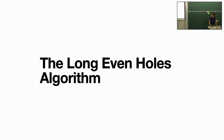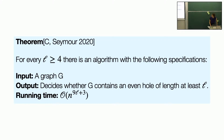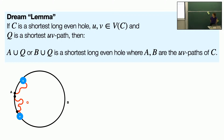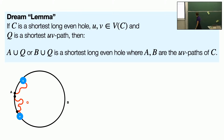Now I'll actually describe the long even holes algorithm. Here's the formal result — I've said it about ten times already. The main idea is something we would like very much to be true: if you have a shortest long even hole and you pick any two vertices on the path and take a shortest path between them, you could somehow substitute this path to get a new long even hole. This would yield a trivial algorithm to detect long even holes, because you could enumerate all triples of vertices.